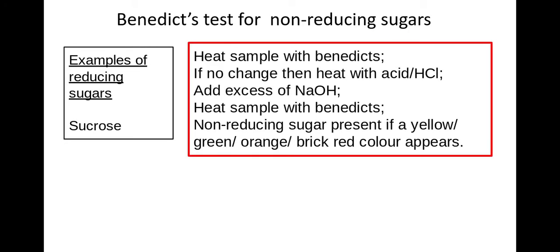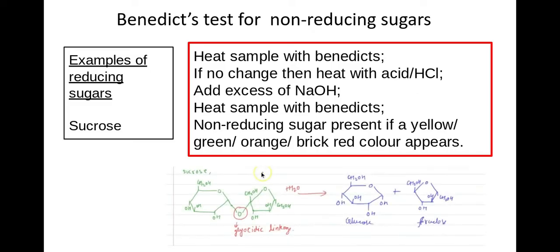What you'd do here is you'd heat the sample with Benedict's as normal in a reducing sugars experiment but you would get no change and if you get no change you would then heat the sample with an acid such as hydrochloric acid. What this does is it breaks the glycosidic bond present within the sucrose molecule so that you then have two monosaccharides, glucose and fructose, and of course these are reducing sugars.